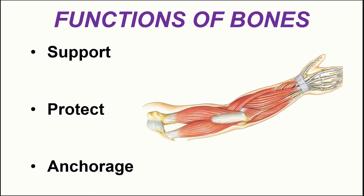Let's look at the functions of bones. The main functions include support and protection. Bones provide the internal supportive framework for the body and help to cradle the soft organs. They also protect soft and delicate organs — think of the brain inside the skull, and the lungs and heart inside the thoracic cage. These are all vulnerable, delicate organs that require bony protection.